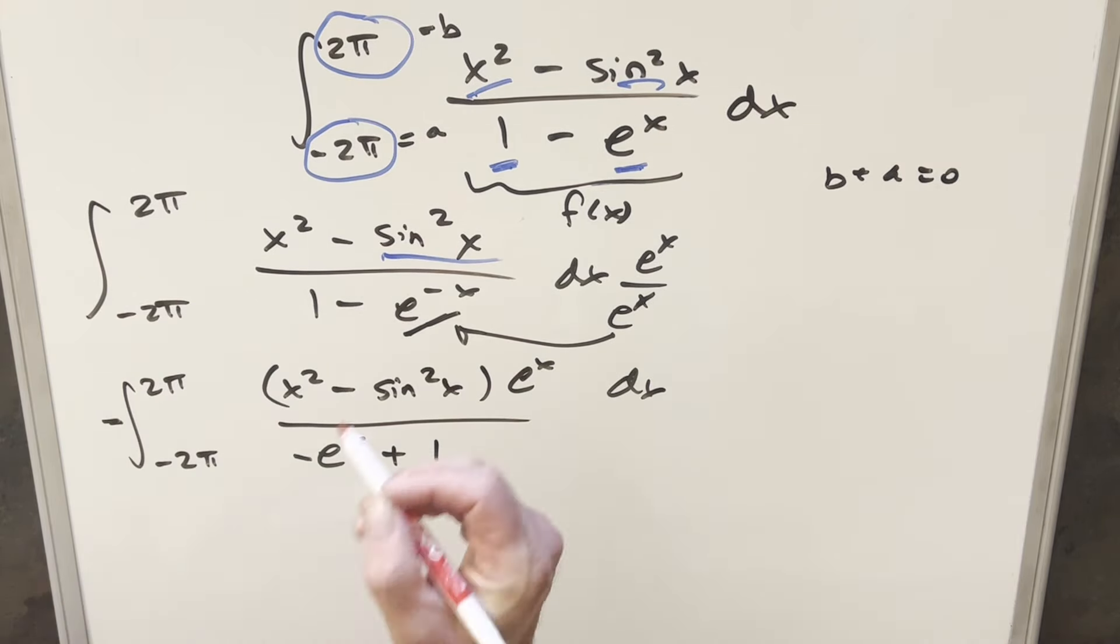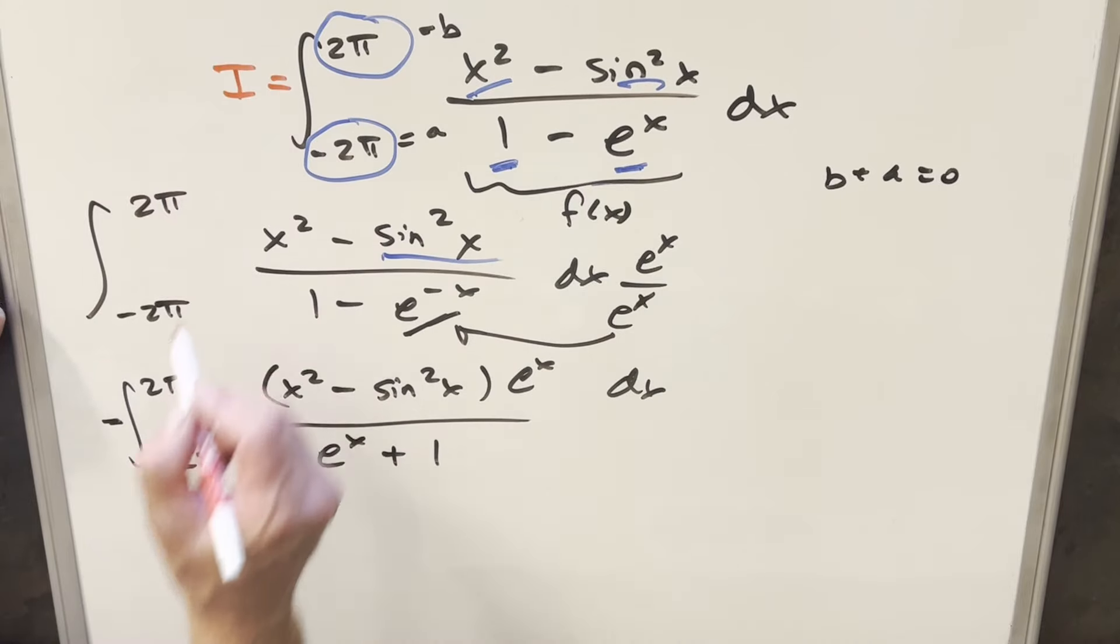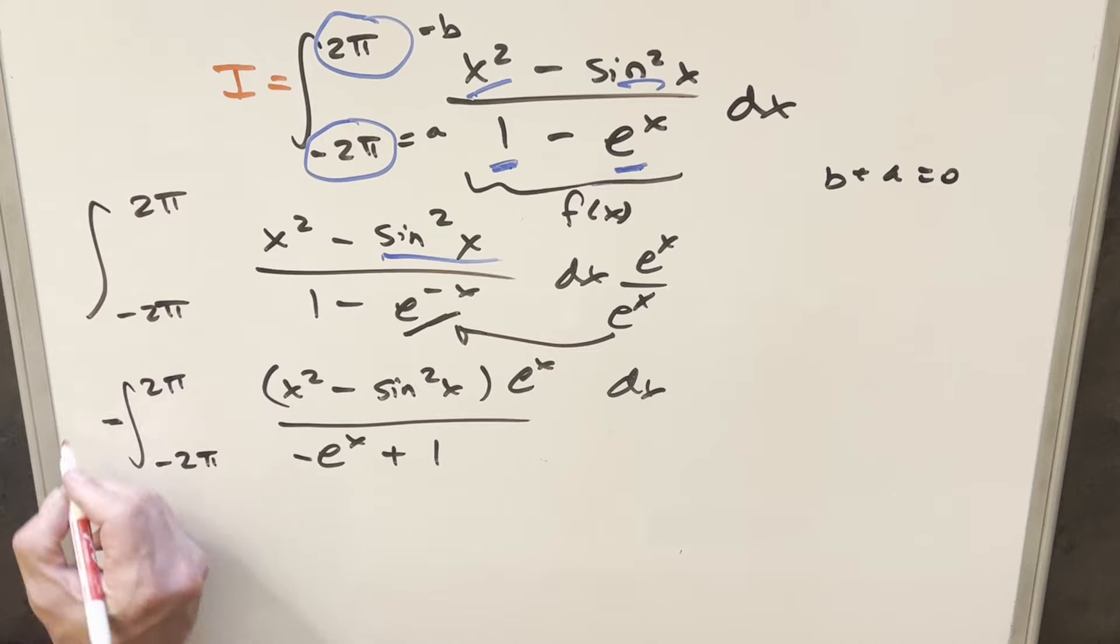And then if we just put some labels on things, our original integral we'll call I. And then since this is equivalent to the original integral, this thing here is also going to be I.